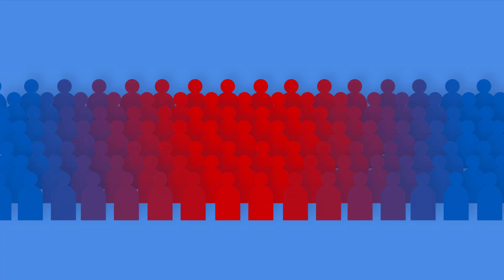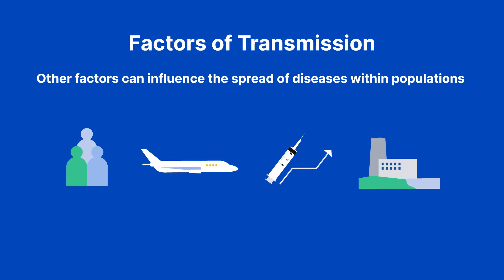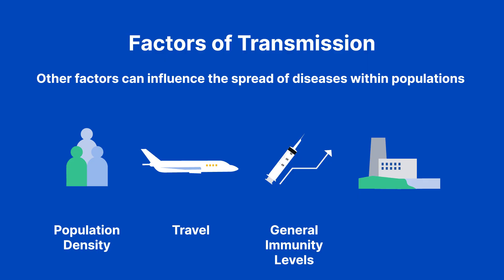Lack of general understanding of disease transmission and prevention can greatly contribute to the spread of a disease. Other factors include population density, as areas with high population density have a higher risk of transmission due to close contact. Travel contributes significantly to the global spread of infectious agents because of confined space, recirculated air, and the speed with which people can cross the globe. General immunity levels and environmental factors such as climate, sanitation, and hygiene also influence disease transmission. For example, waterborne diseases are more prevalent in areas with poor sanitation, and poor sewage sanitation can lead to diseases like dysentery.